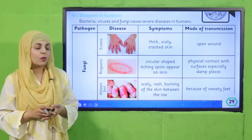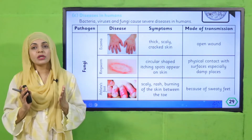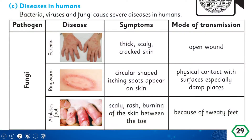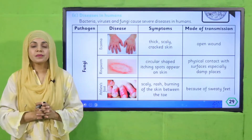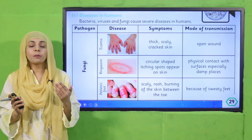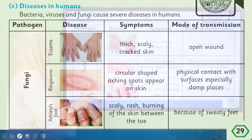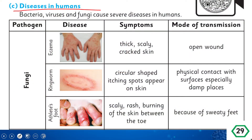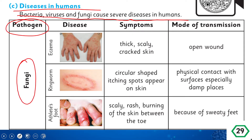Please open page number 29 in your Science 5 books. Let's start reading: 'Diseases in Humans — bacteria, viruses, and fungi cause severe diseases in humans.' In the table, the first pathogen we will discuss is fungi, which causes different diseases.